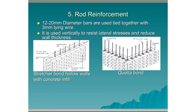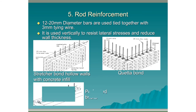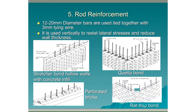Next we have Queta bond, which accommodates rod reinforcement because small vertical pockets are left all the way up the full height of the wall. Alternatively, specially formed perforated bricks can be used to accommodate the rod reinforcement. Or rat trap bond, which also leaves vertical pockets up the entire centre of the wall. As with Queta bond, the space around the rods can be filled with concrete.